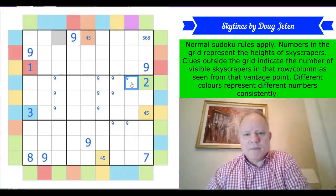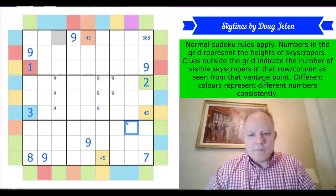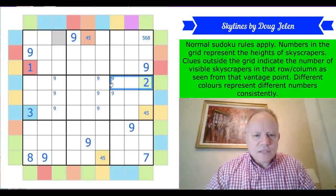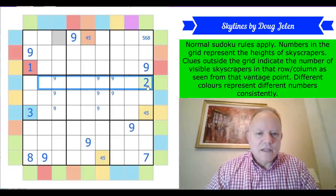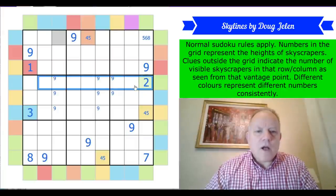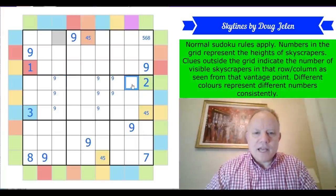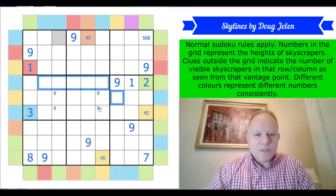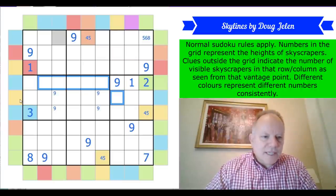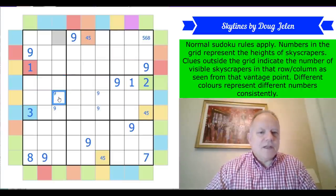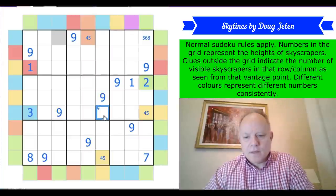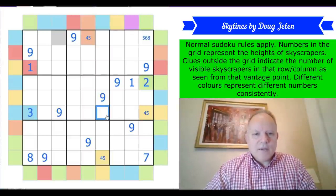Purple is more than four or five since those are yellow and orange - purple is at least six. So nine can't possibly be there, and we now know where nine is in column eight. And look - with green giving a two clue to start, what happens here? It can't be nine, it's got to be one, and now nine has to appear immediately. That resolves all but two of our nines. Yellow is at least four, so those remaining nines are placed, and we're done with nines.